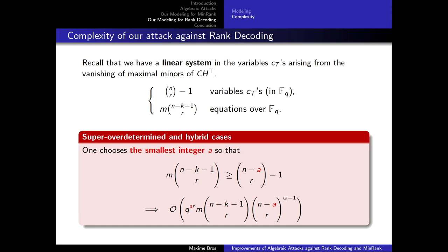If we don't have enough equations, we can guess some columns of the matrix C. Knowing more columns means knowing more maximal minors, which removes some variables, but this guessing comes at an exponential cost. So we find the smallest integer A such that the condition is fulfilled — this is called the hybrid case. Notice also that this hybrid approach of guessing columns of C can also be applied to the min rank problem: when we don't have enough equations in the min rank modeling, instead of multiplying equations by X_i monomials, we can guess columns of C at an exponential cost.